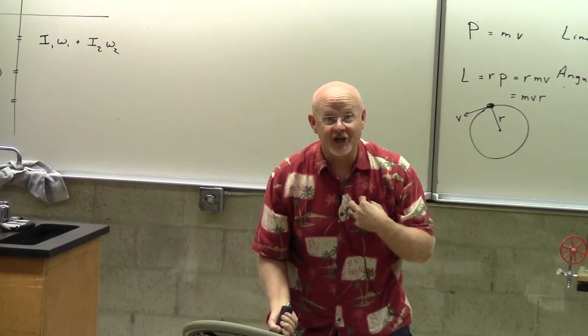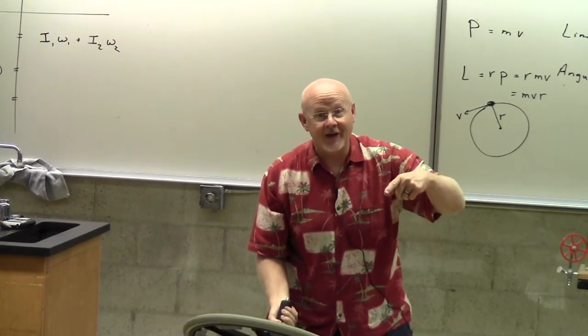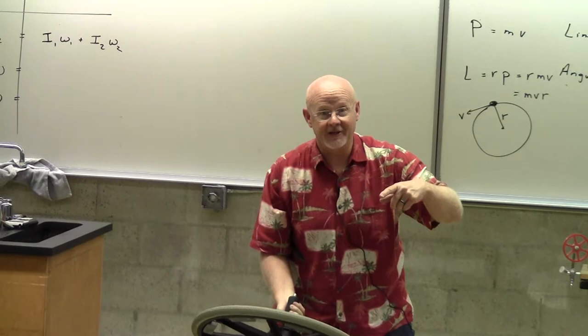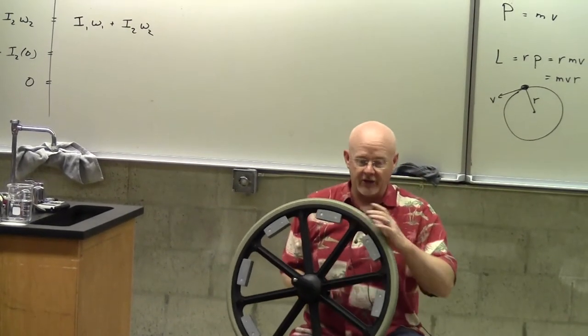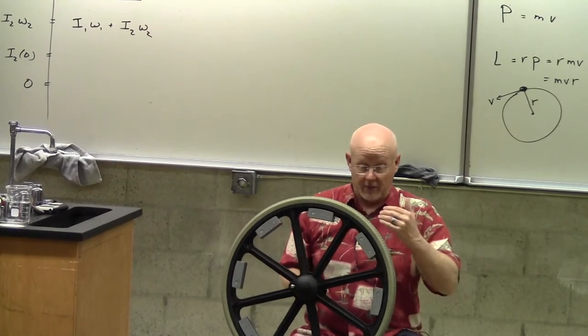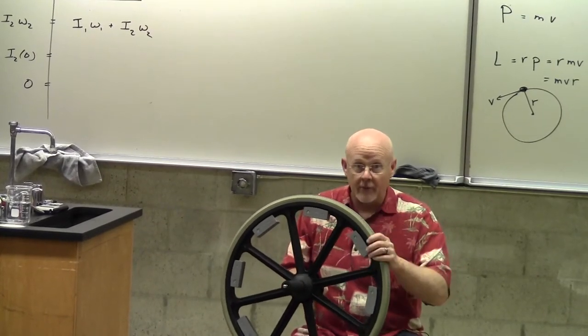So to have a total angular momentum of zero, what would I have to do? I would have to change from going counterclockwise to clockwise. Watch, I'll turn it over after I make one revolution. Alright, so I'm gonna start. Me and the wheel have no angular momentum.